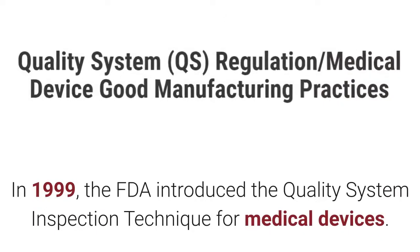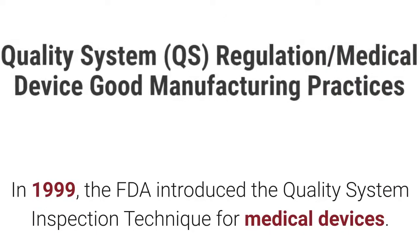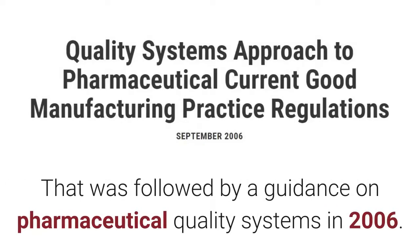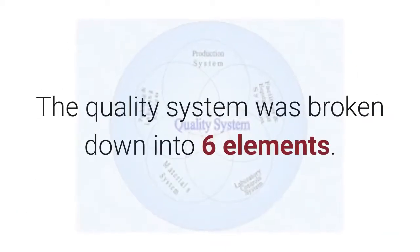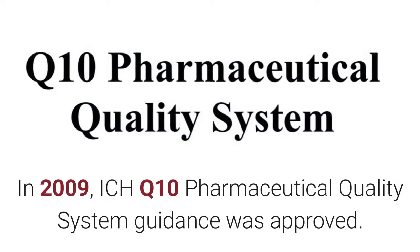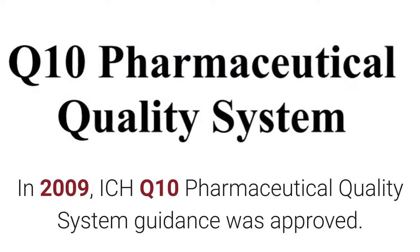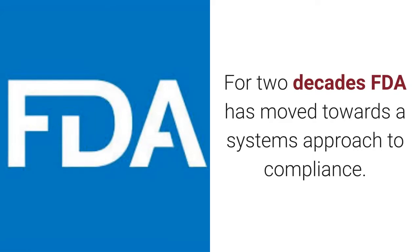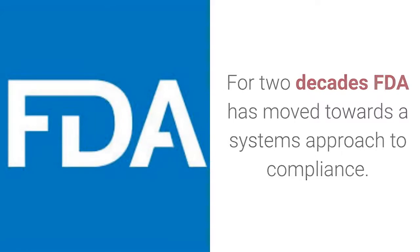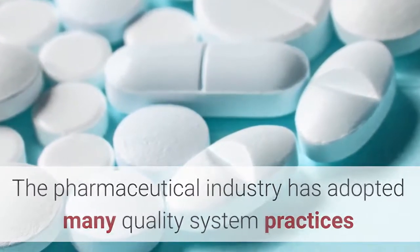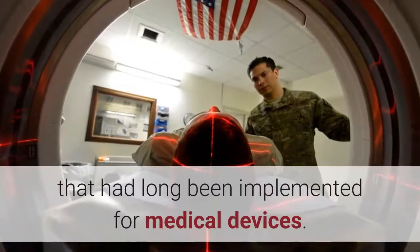In 1999, the FDA introduced the quality system inspection technique for medical devices. That was followed by a guidance on pharmaceutical quality systems in 2006, where the quality system was broken down into six elements. In 2009, ICH Q10 Pharmaceutical Quality System Guidance was approved. For two decades, FDA has moved toward a system approach to compliance. The pharmaceutical industry has adopted many quality system practices that had long been implemented for medical devices.